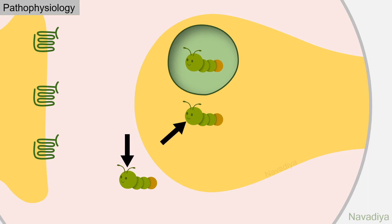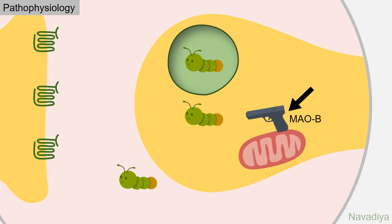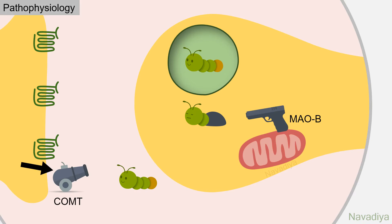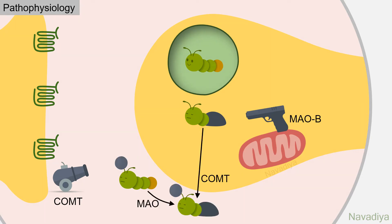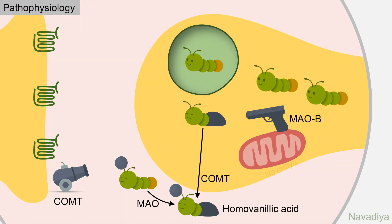Some dopamine is degraded. There are two enzymes responsible for this. The first is monoamine oxidase, or MAO — especially MAO-B — which is present on the membrane of mitochondria and inactivates dopamine present in the cytoplasm. The other enzyme is catechol-O-methyltransferase, or COMT. Dopamine in the synaptic cleft is inactivated by this enzyme. These enzymes also act on metabolites and finally produce homovanillic acid. The dopamine thus lost is replaced by synthesis of new dopamine.